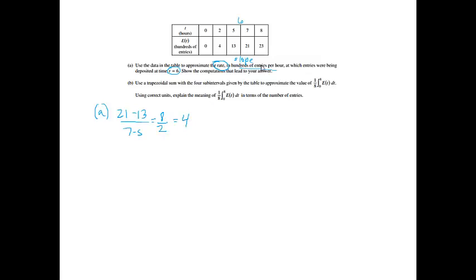That's going to give me 8 over 2, which will be 4. And it did say that it's in hundreds of entries per hour, so it will be 400 entries per hour because it was a rate, and this was worth 1 point.